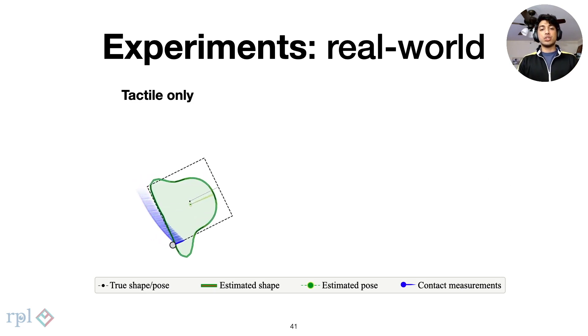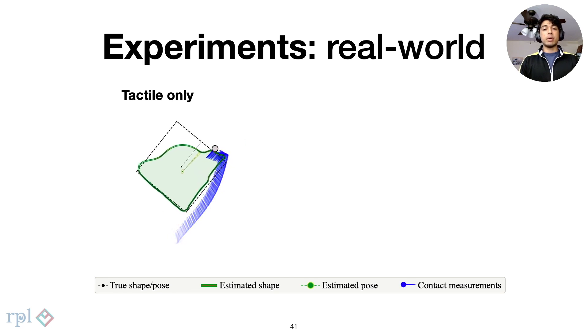We first observe the results for one such trial. While we recover shape and pose, it is less accurate compared to the simulation results. This is due to the lack of a second pusher and motion model uncertainty.